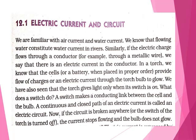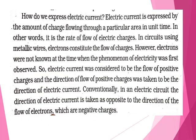That open or closed position is called on and off. If the circuit is broken anywhere or the switch of the torch is turned off, the current stops flowing from the cell to the bulb and the bulb does not glow. Electric current is expressed by the amount of charge flowing through a particular area in a unit time — it may be a second, a minute, or an hour. In other words, it is the rate of flow of electric charges.